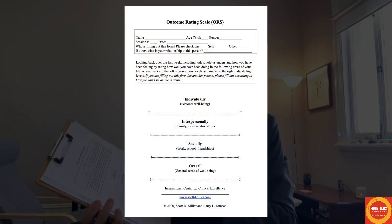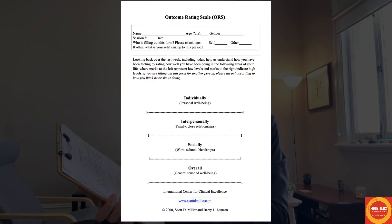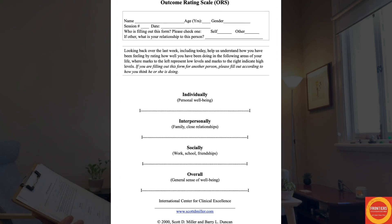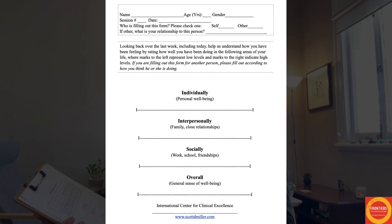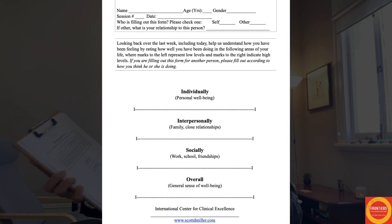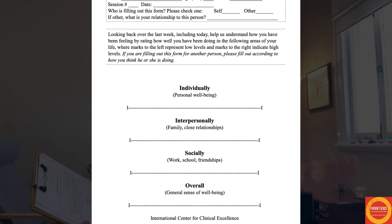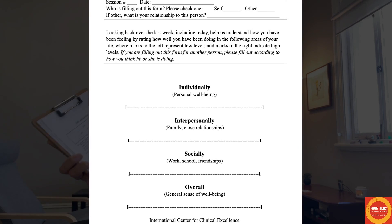For example, if you administer some kind of outcome rating scale — in my case, I've used the Outcome Rating Scale, or ORS, since 2004. The ORS has four components: the person's individual wellbeing, how they're feeling on a sliding scale of zero to ten; the interpersonal relationship, how they feel with people close in their life; socially, things like friends, work, or schooling; and overall how they feel.